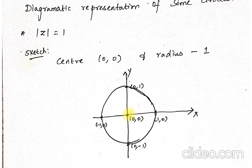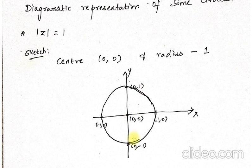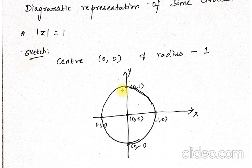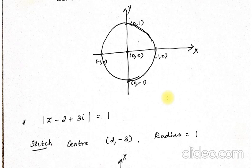Going upward, y increases by 1, giving (0, 1); going downward, y decreases by 1, giving (0, minus 1). Once you have plotted those 4 points, just connect them — that is how you draw a circle. It is very simple. You studied these things in graphs in 10th standard; we are just refreshing it now.